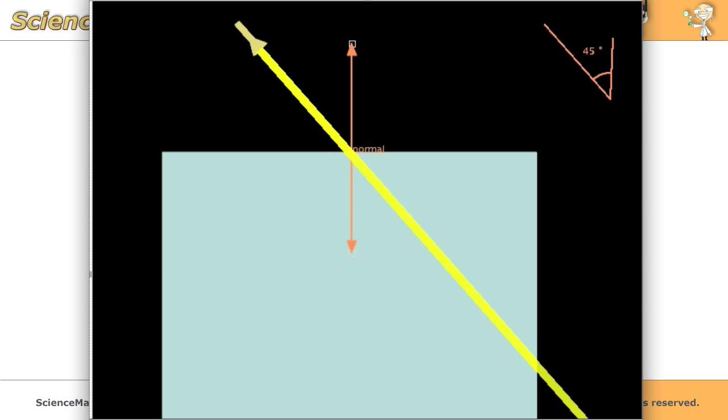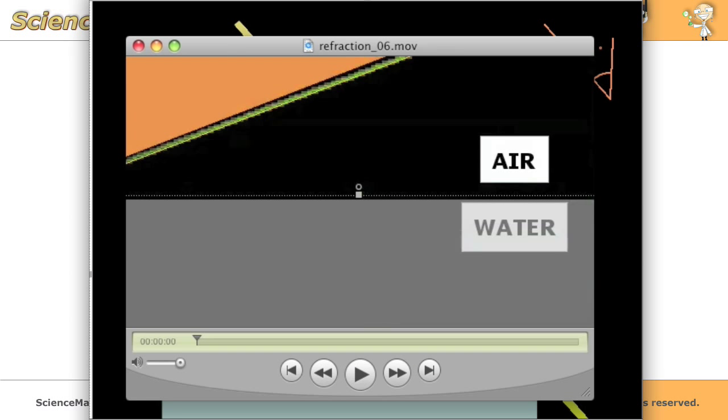Snell's law is applied in instances of refraction. Refraction occurs when a wavefront, such as the wave of light, strikes a medium boundary. Light will bend if the medium boundary has a density difference.